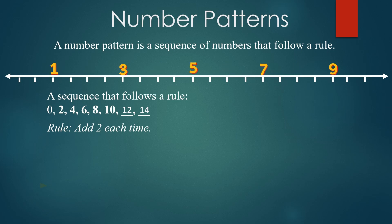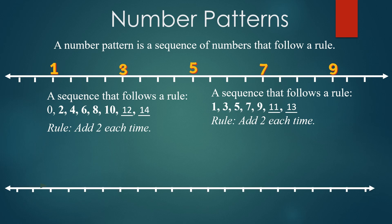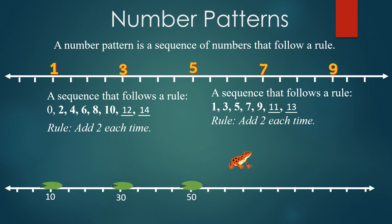Now take one more. Here the sequence is 1, 3, 5, 7, 9, and the next two numbers are 11 and 13. Here also the rule is add 2 each time. Take the next example. Here we are starting from 10 and the rule is add 20. So we get 30, next is 50, then 70 and 90, and it goes on — every time we add 20 to it.